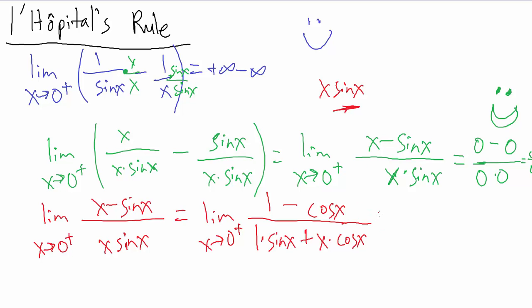Let's try direct substitution again. As x goes to zero from the positive side: on top, one goes to one, cosine of x goes to cosine of zero which is one, so one minus one is zero. On the bottom, sine of x goes to zero so that's one times zero; plus x goes to zero, so zero times cosine of zero which is one, still zero. So again we got zero divided by zero, which tells us we can use L'Hôpital's rule again.